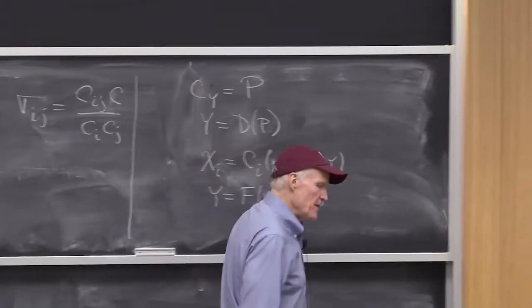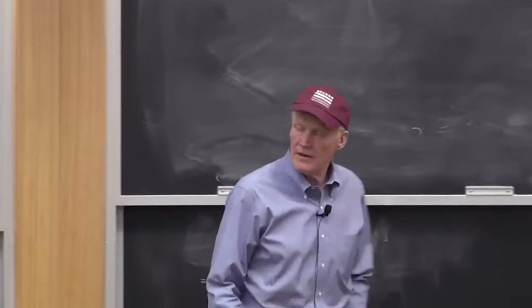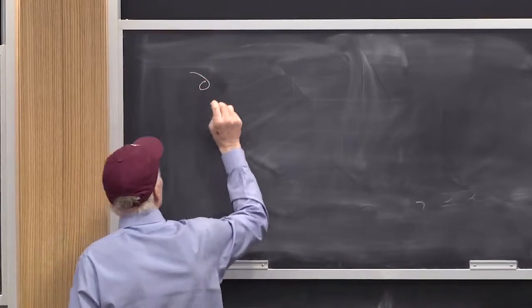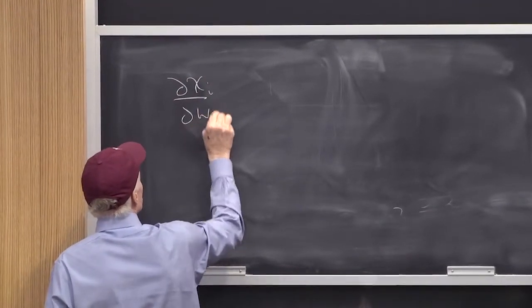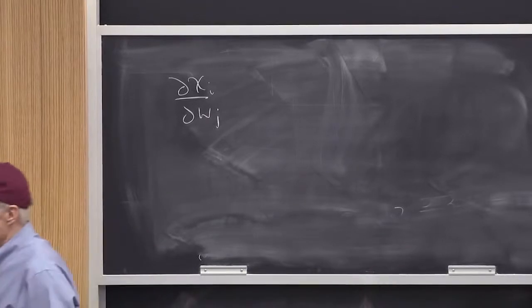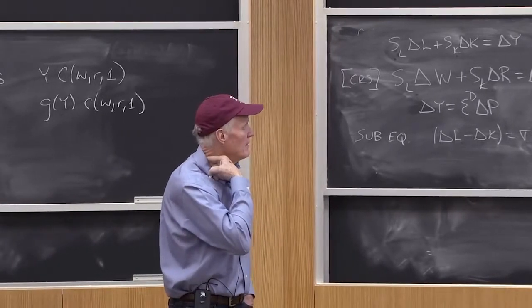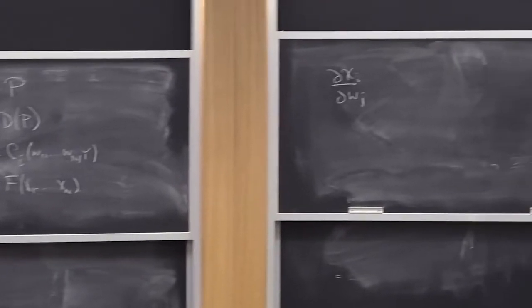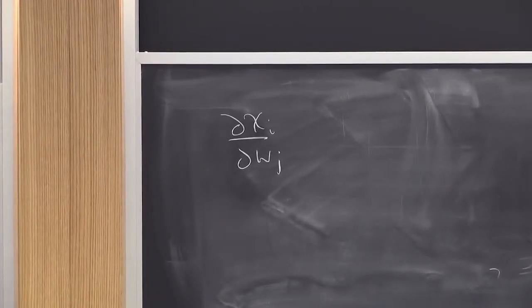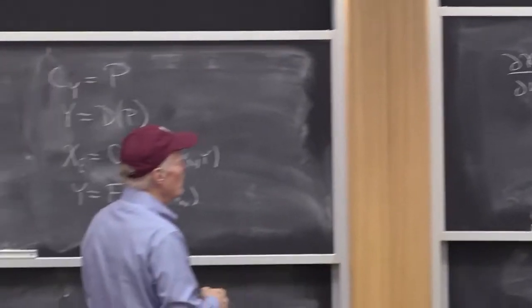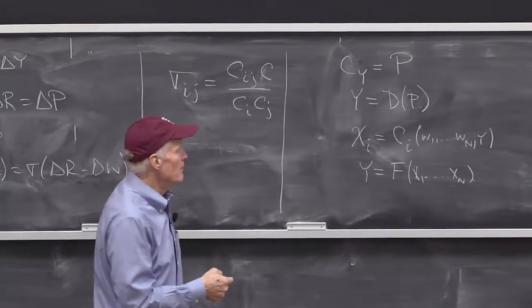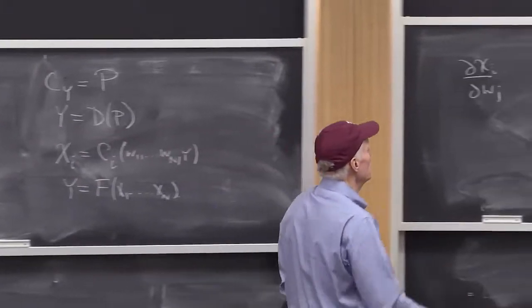So how would we think about factor demand in this world? We might say, what is partial xi, partial wj, at the industry level, imposing constant returns to scale? Well, how would I solve that? What would I do? Well, I just use these equations I wrote on the board. So how would I do it?